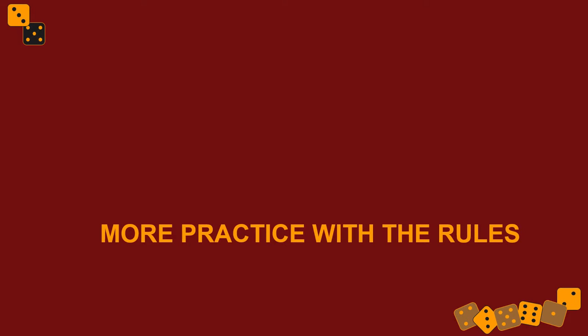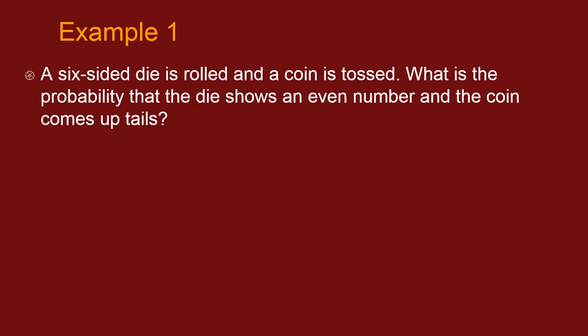Alright, let's have some more practice with these and, or, and not rules. We'll go through these fairly quickly. Example one: a six-sided die is rolled and a coin is tossed. What's the probability that the die shows an even number and the coin comes up tails?